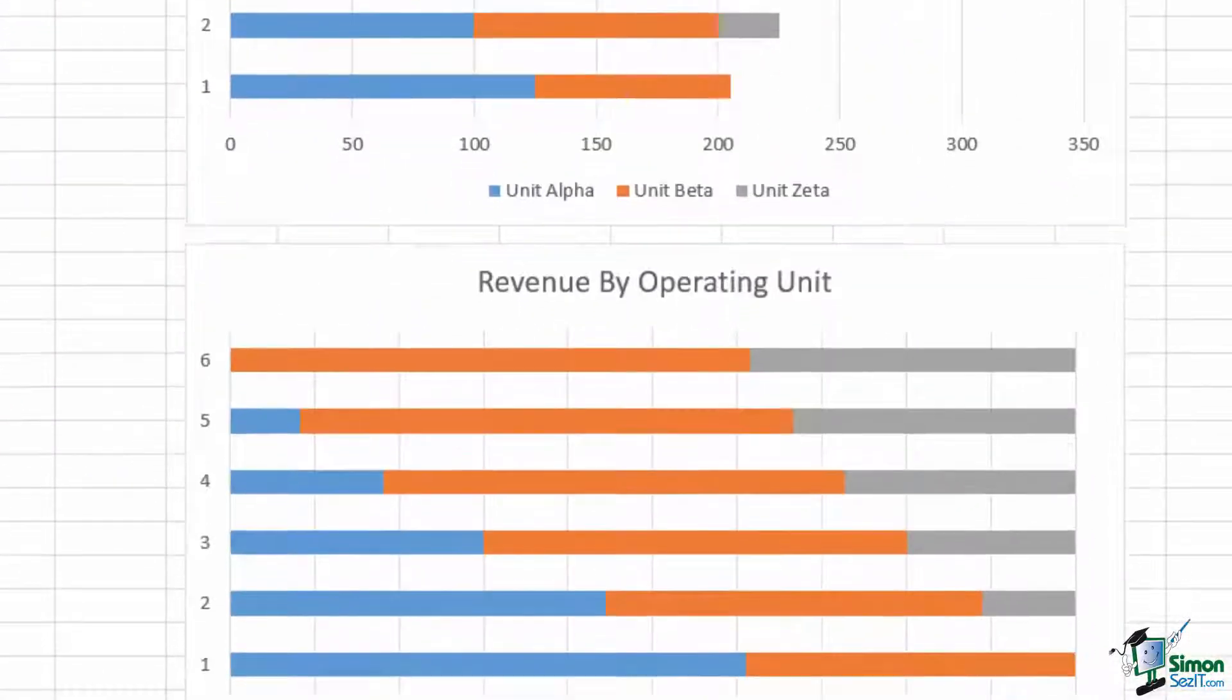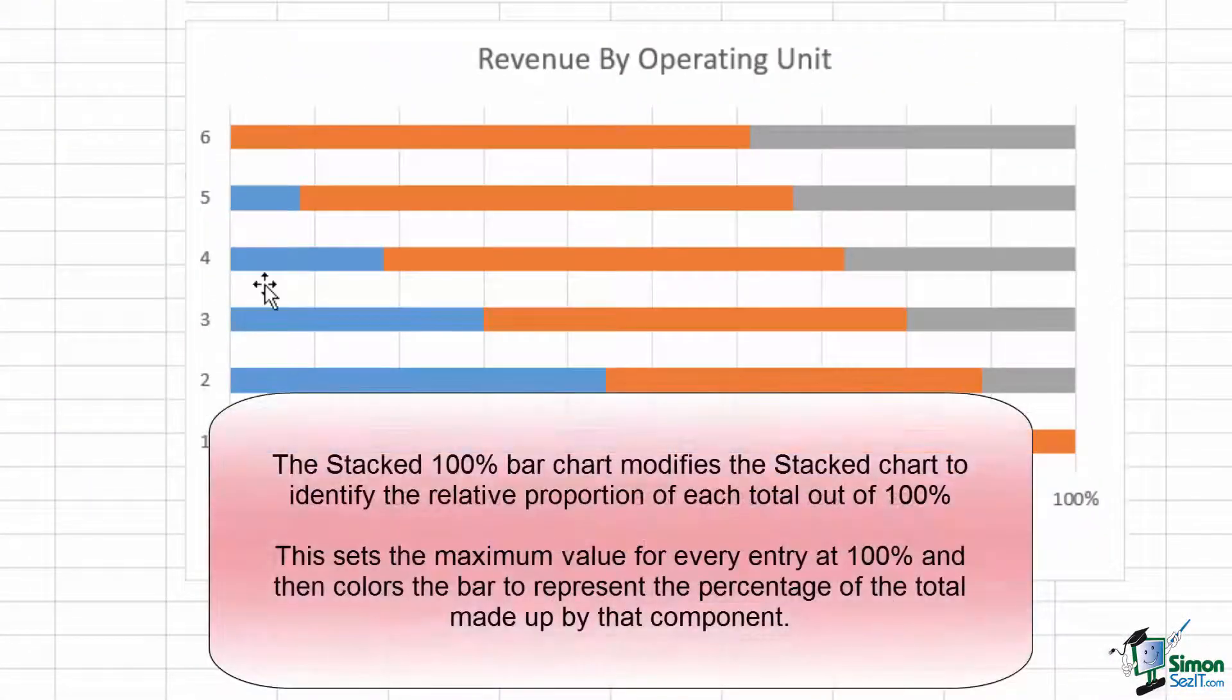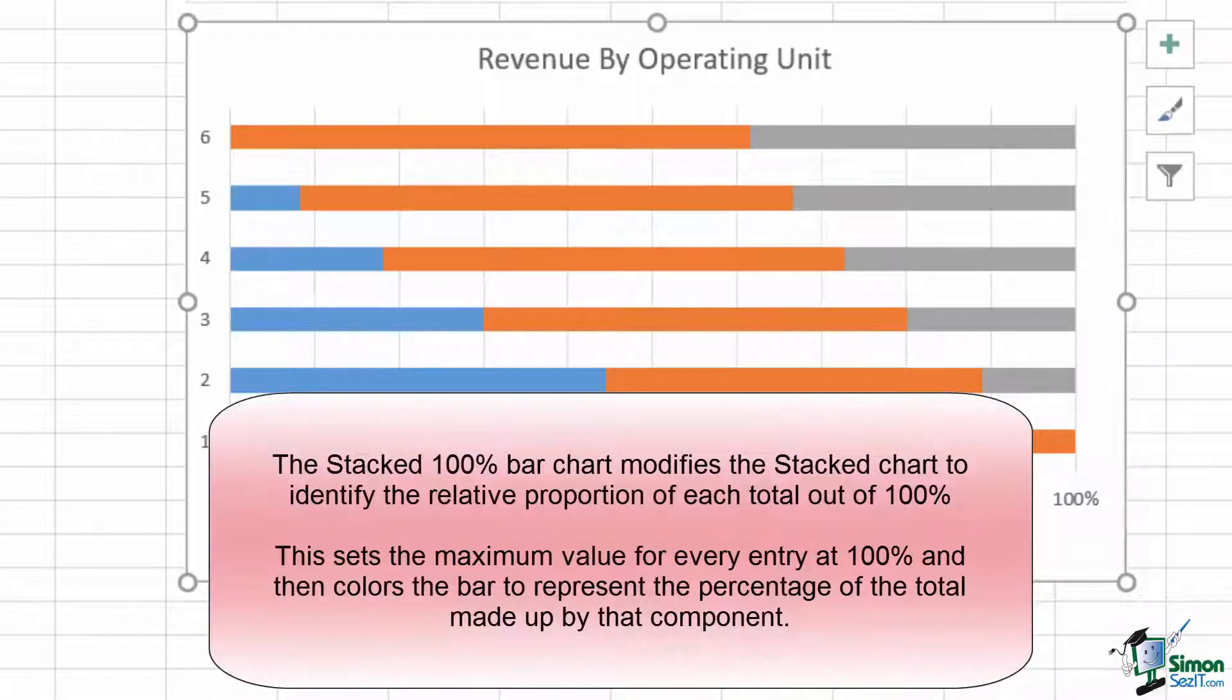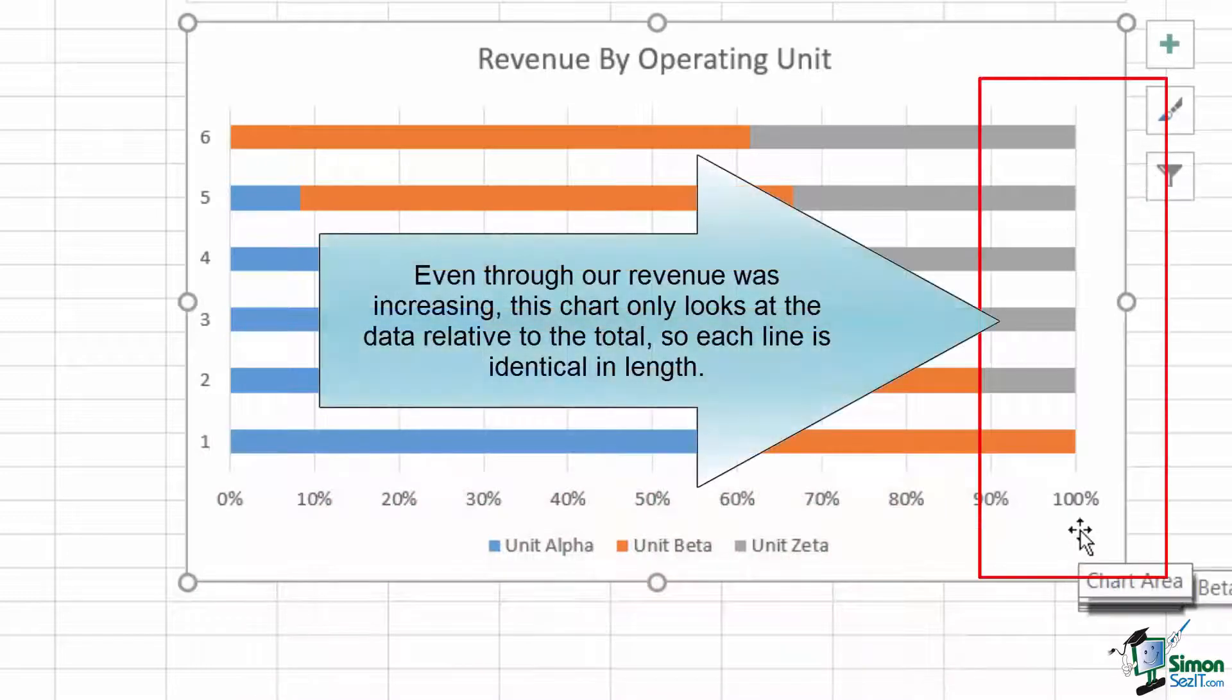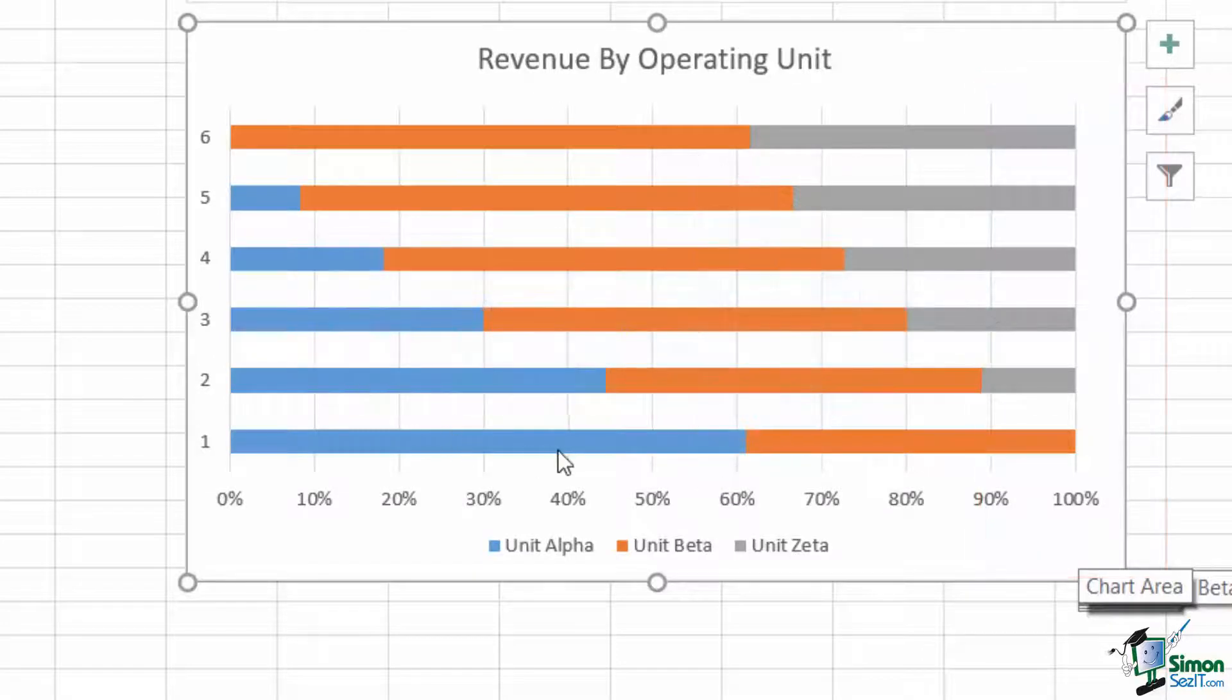The stacked 100% bar chart is a slight modification to the prior chart that frames each contribution as a fraction of 1. Each line will add up to 100% no matter what, and the color indicates which component contributes what percentage.